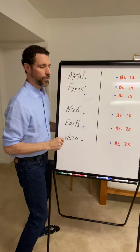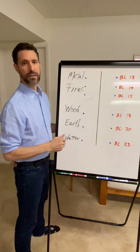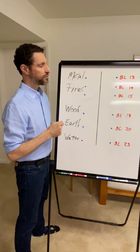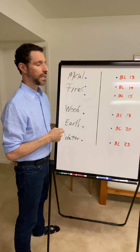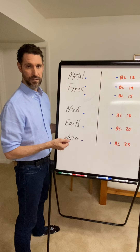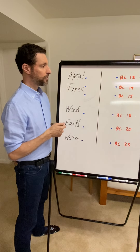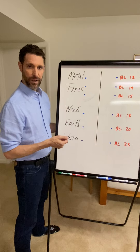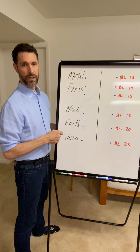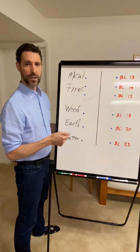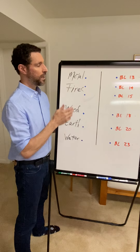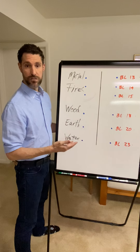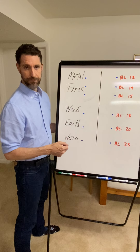In this video we're going to be talking about the associated effect points in terms of their function as Shu transporting points. Shu means to transport, and what that implies is that the Qi is transported between these points and their associated zhang organs.